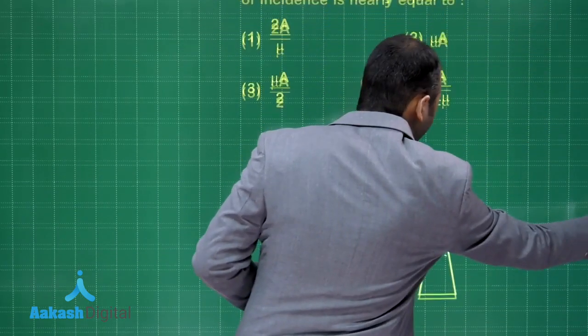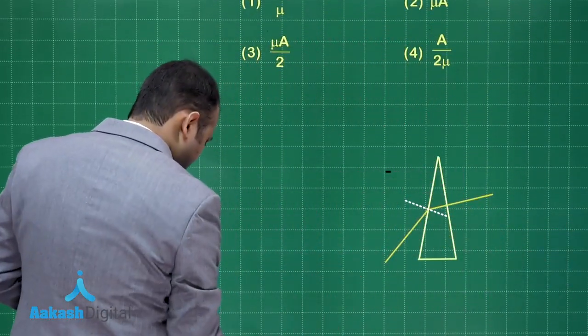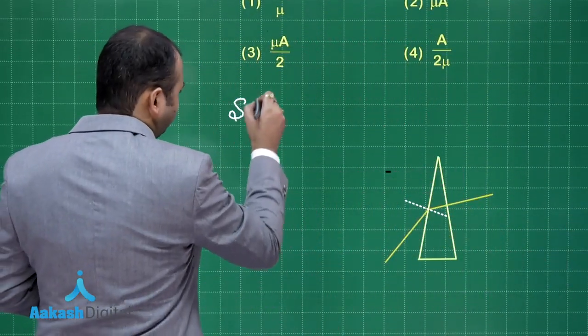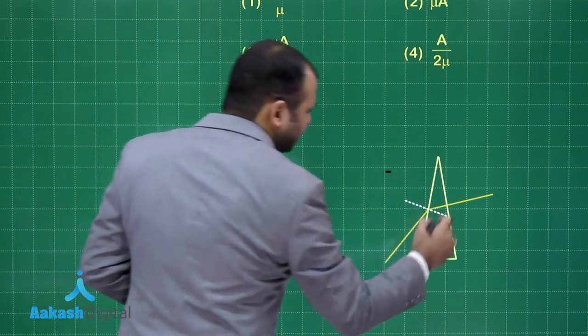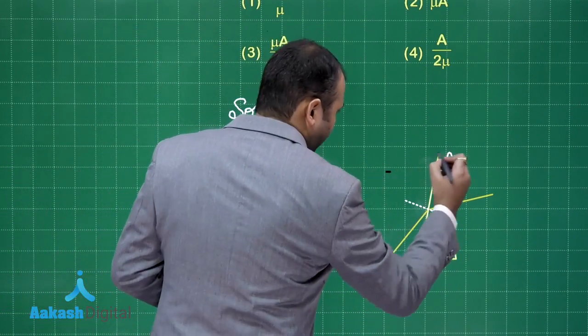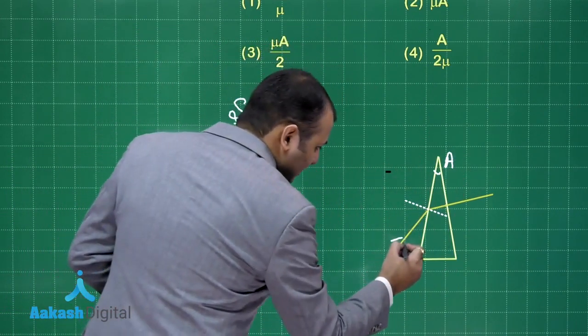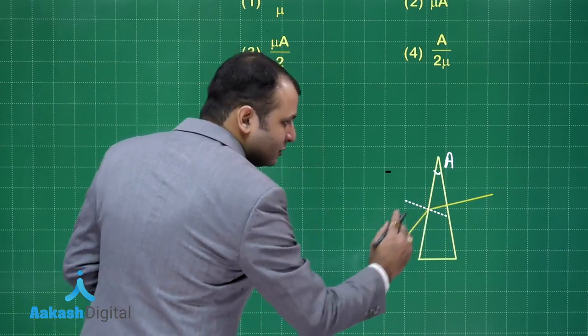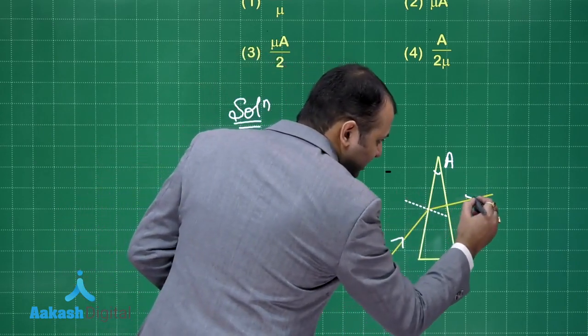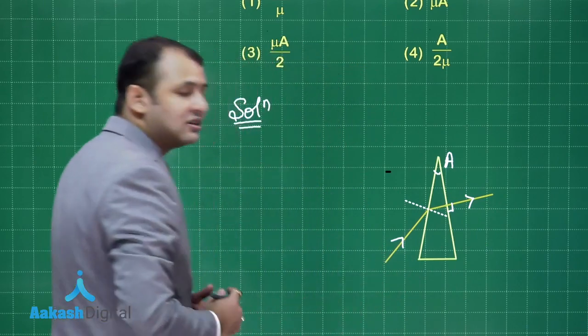So let us see, I have made a diagram for you. I hope this is visible. Now let us start with the solution. Now this prism, this is angle A, this is the normal, this is the incident ray. It entered the prism and after that it moved such like it is perpendicular to the surface.